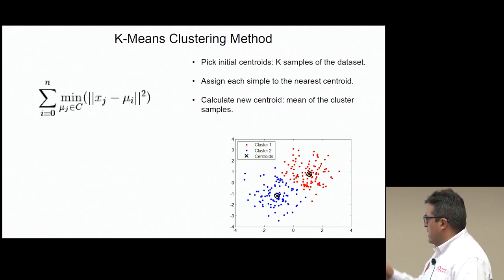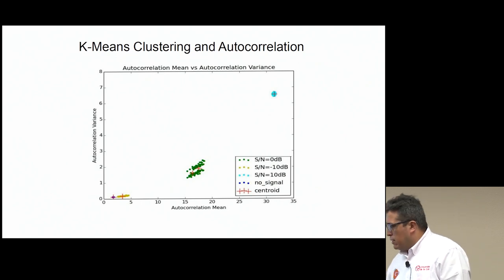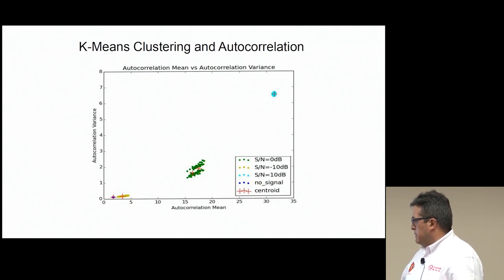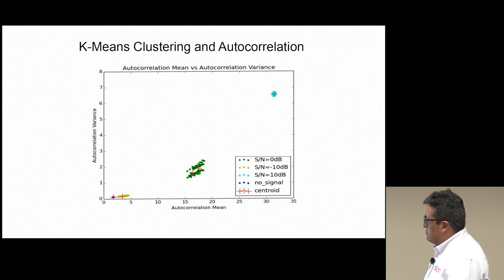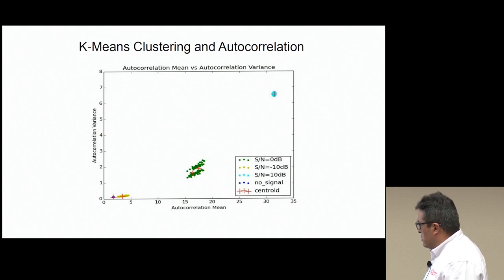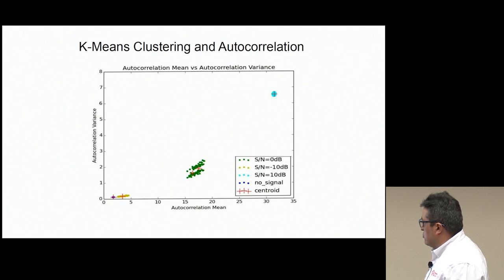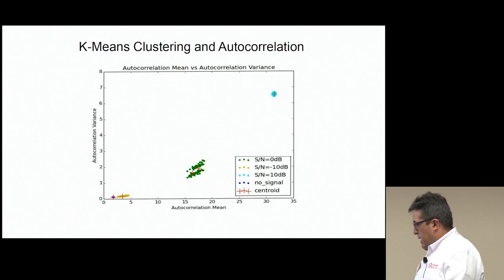The centroids are basically the center of the clusters. To implement this method, I needed to put the autocorrelation in a plane to have some data points. What I did was calculate the variance and the mean of the autocorrelation, and then build the clusters. I have here a graph showing different clusters for different conditions — for example, at 0 dB signal-to-noise ratio, at minus 10 dB, when there is no signal (meaning it's noise), and when we have 10 dB of signal-to-noise ratio.